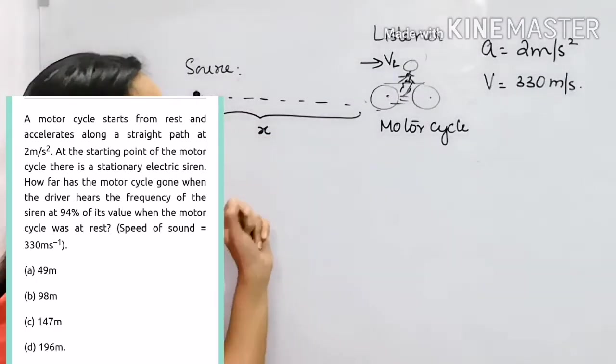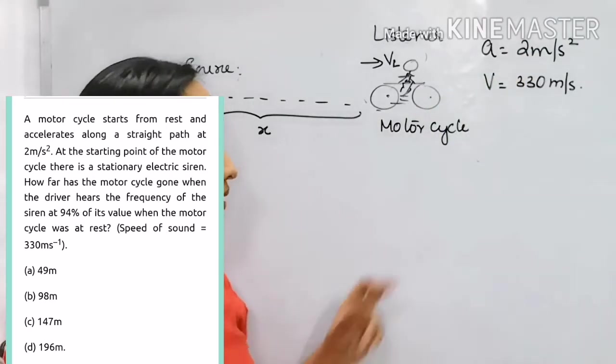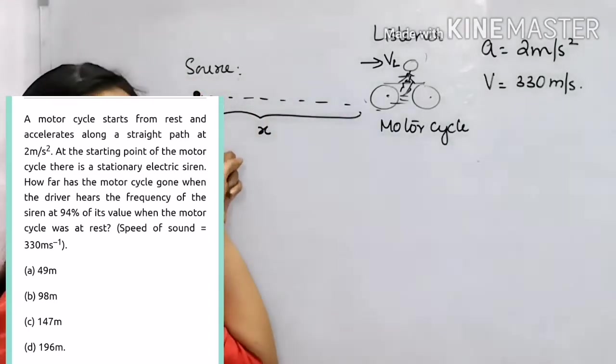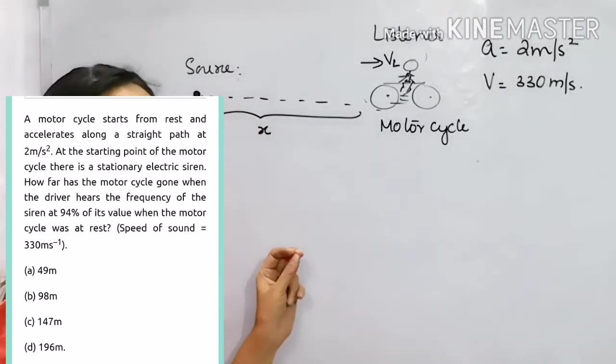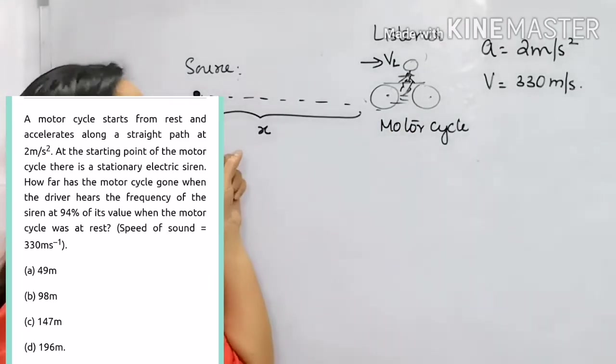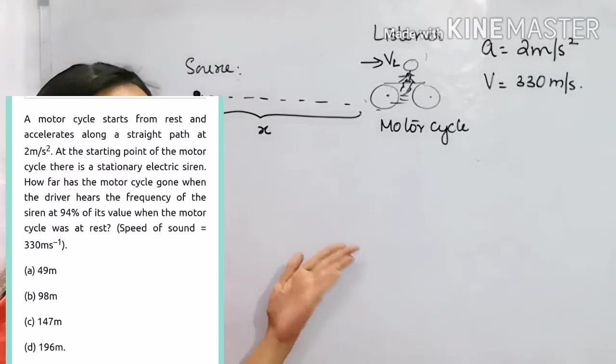In this question, given that a motorcycle moves with an acceleration 2 meters per second squared, speed of sound in air is 330 meters per second. At what distance from a source of sound will he hear a frequency equal to 94% of the frequency when he was at rest? Already given that the source is at rest. So when he is also at rest, listener is also at rest. The frequency heard will be equal to actual frequency.